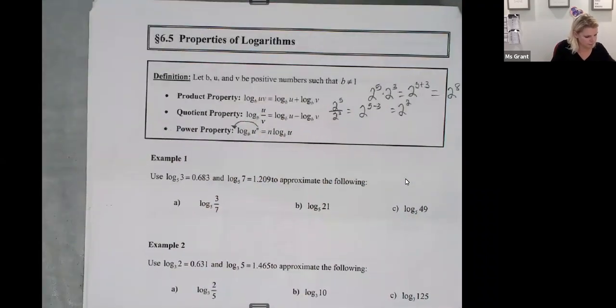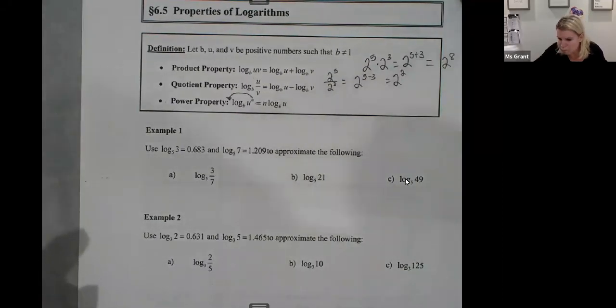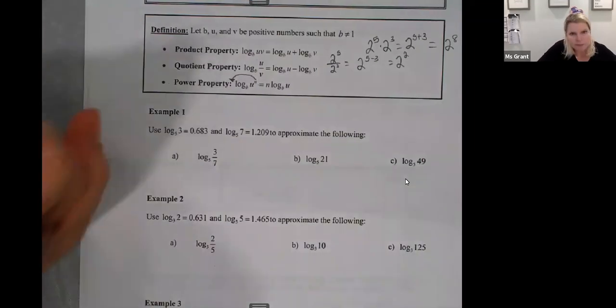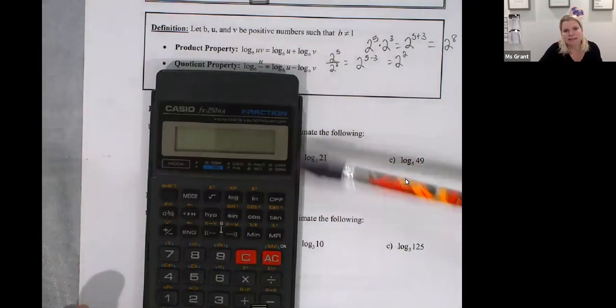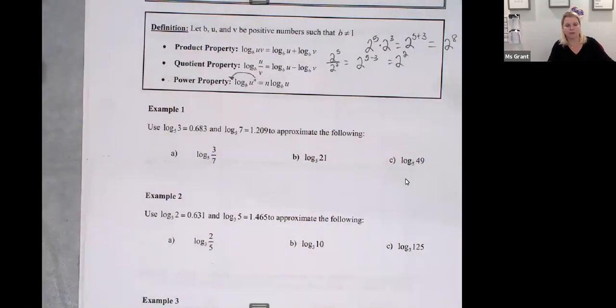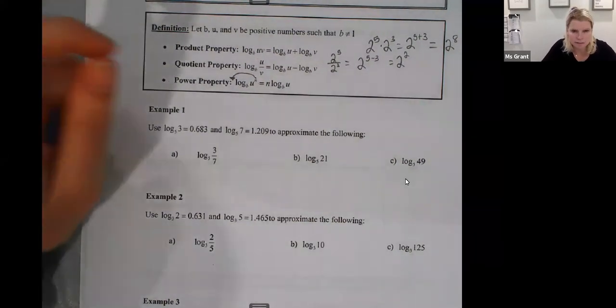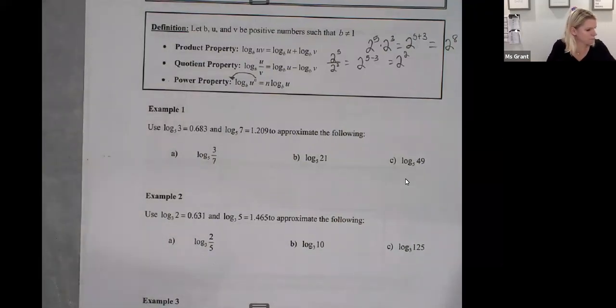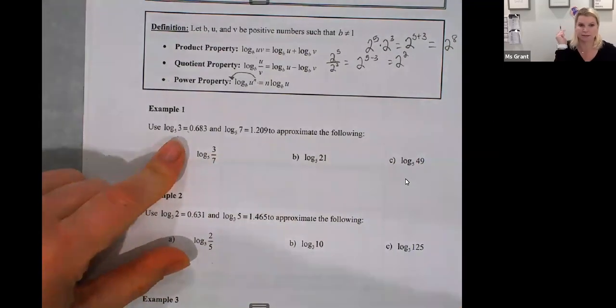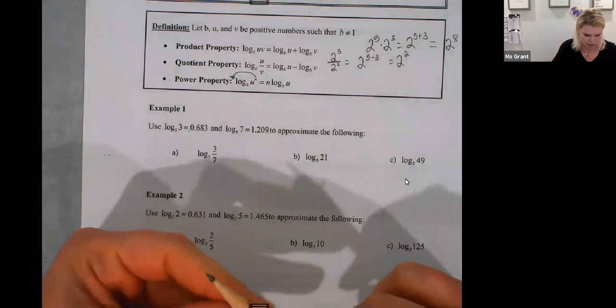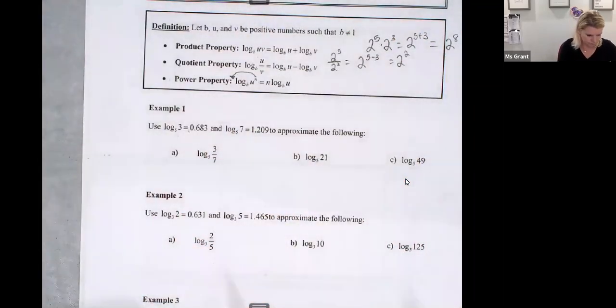So what I'm going to do is I'm going to go really slow through these and we're going to practice using the properties. So I am giving you the decimal value because remember in a calculator, logarithm is always base 10. So if I have a different base, then my calculator is not going to give me what I want. So what happens is there exists these logarithm tables where you get decimal values for logarithms. Log base five of three is 683 thousandths. Log base five of seven is 1 and 209 thousandths. So here we go.